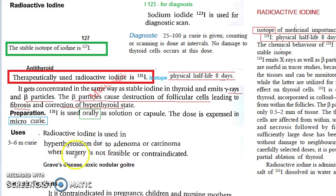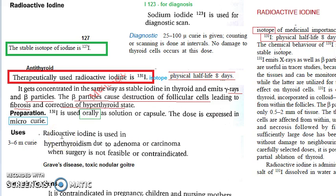Why would you use radioactive iodine at all? Because if there is hyperthyroidism and you can't do surgery — for instance, the thyroid gland already has an adenoma or a carcinoma — then you will use radioactive iodine to destroy that cancerous tissue.